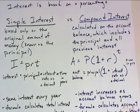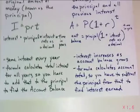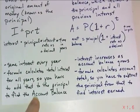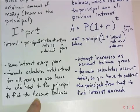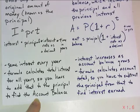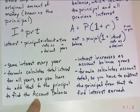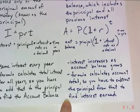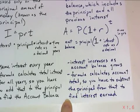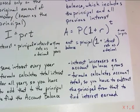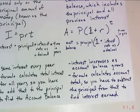The other difference is what each formula calculates. The simple interest formula calculates I — the total interest earned — so if you want to know the account balance, you have to use the formula and then add the total interest to the original principal. The compound interest formula, on the other hand, calculates the total account balance — the principal plus all accumulated interest. So if you want just the interest, you would subtract the principal from the result.